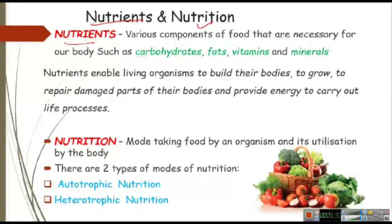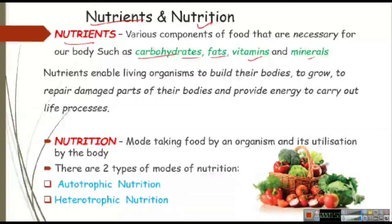These nutrients are very essential for our body. We have to consume them from outside so that we can do our daily work properly, and to do that work we obviously need energy. Energy we get from carbohydrates and fats. Vitamins help us to stay healthy — fruits give us vitamins and protect us from various diseases. Minerals are also very essential for our body.